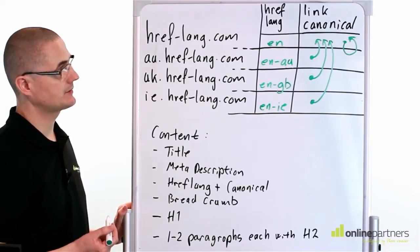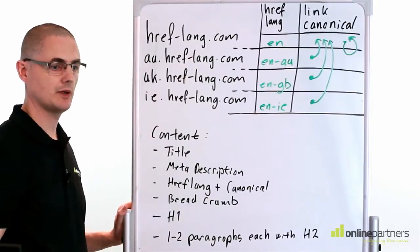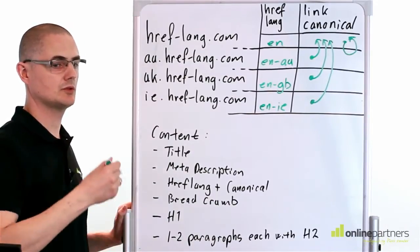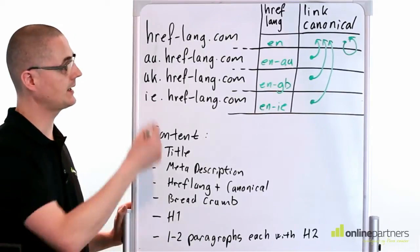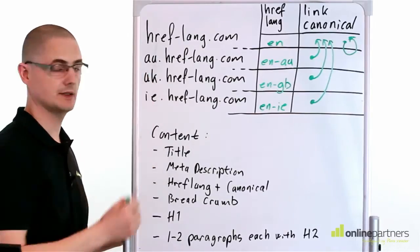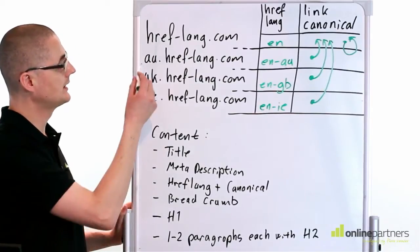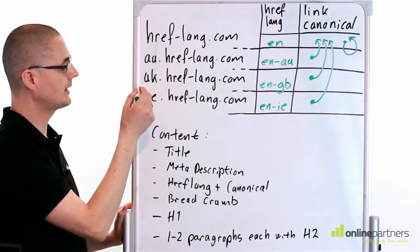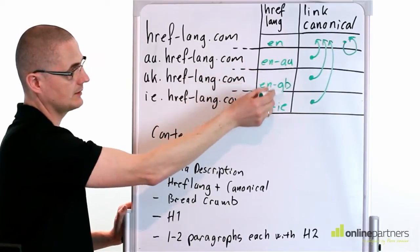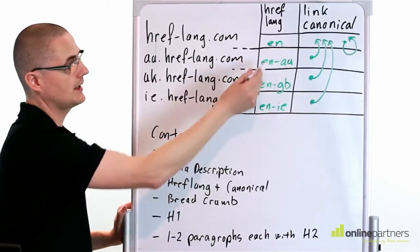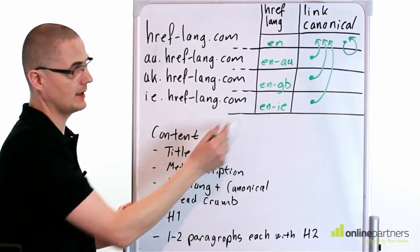Let's start with the hreflang option. If you look at the main domain, we just indicated language, which is English, so we could test general English for all English-speaking countries — that could be the US or Canada — because none of these countries have been targeted on any of the three subdomains. The three subdomains targeted for Australia, UK, and IE have both the language indicator and then a dash followed by the country: AU for Australia, GB for Great Britain aka United Kingdom, and IE for Ireland.